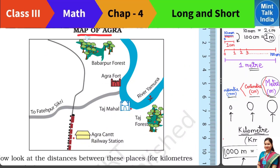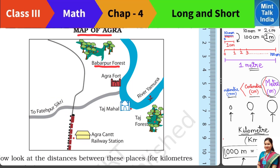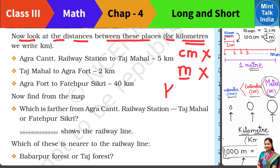After arriving at the railway station, we look at the map to find directions. The family of the two children first visited the Taj Mahal, then Fatehpur Sikri, and then Agra Fort. On the map, we can also see Babarpur Forest, the Taj Forest, and the Yamuna river. The dotted line in the map is the railway track where the train runs. Now let us look at the distances between these places in kilometers, because when we travel on the road these are very long distances — we cannot measure them with a ruler or meter rod, so we measure in km.